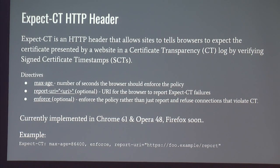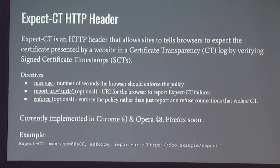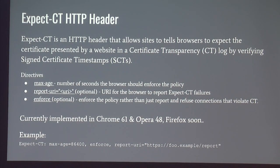There's also the Expect-CT HTTP header. This is a new HTTP header that allows sites to tell browsers to expect the certificate presented by the website to be in the log. It's a way to tell current web browsers to enable certificate transparency validation before August 2018. It's currently implemented in Chrome 61 and Opera 48, with Firefox implementing support soon. Similar to the CAA DNS record, you can set a report URI where browsers will report to you if there's a violation. Max-age is how long to enforce or cache this policy. The enforce directive is optional — if set, it will abort the connection if the certificate's not in the log. It's useful right now to leave it not enforced with a report URI so you can test what would happen.